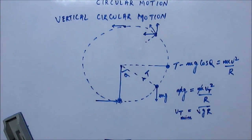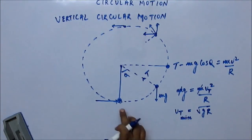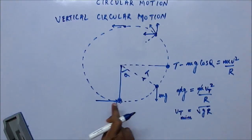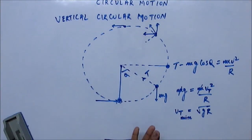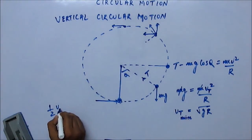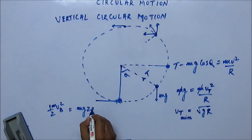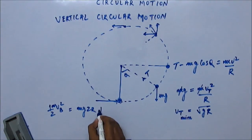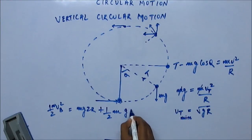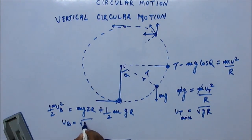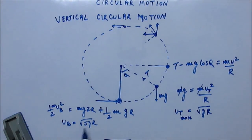If the minimum velocity at the top is √(gr), we can find the required velocity at the bottom using conservation of energy. At the bottom, kinetic energy is ½mv²_b. When the bob reaches the top, it has gained potential energy mg(2r) and still has kinetic energy ½mv². From this, the velocity at the bottom should be √(5gr). This is the minimum velocity with which the bob must start from the bottom to complete the circular path.